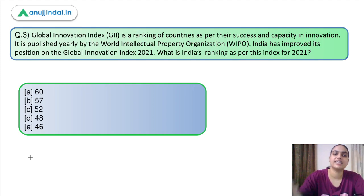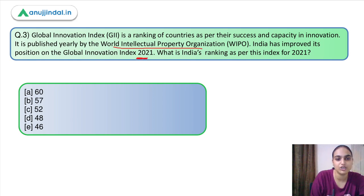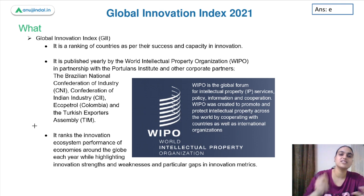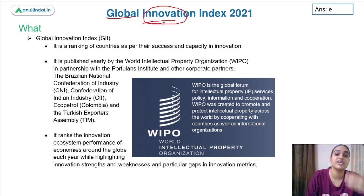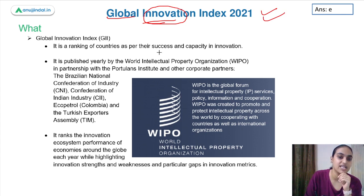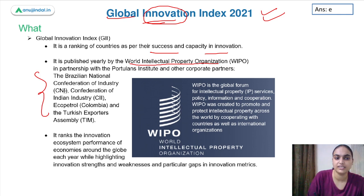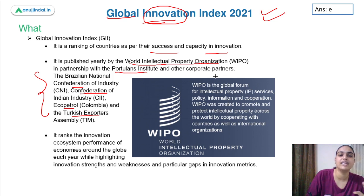Moving to question number 3: the Global Innovation Index is a ranking of countries as per their success and capacity in innovation, published yearly by the World Intellectual Property Organization. India's rank improved in 2021 — what is India's ranking? The answer is option E: 46. The GII ranks countries worldwide on the basis of innovation. It is published by WIPO in partnership with corporate partners such as the Brazilian National Confederation, Confederation of Indian Industry, Ecopetrol, Turkish Exporters, and the Portland Institute.